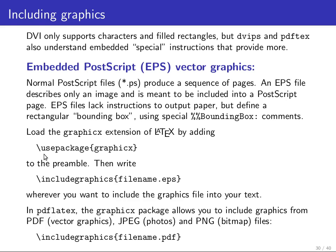You do this by including the graphicx package — there was an older graphics package with an S at the end, then an extension replaced the S with an X, and that's the more commonly used one today. Once included, you can write includegraphics and then in parentheses the file name. If you use original TeX you can only include PostScript files. With PDFTeX or pdflatex you can include PDF vector graphics, JPEG for photos, and PNG for lossless compressed bitmap files.